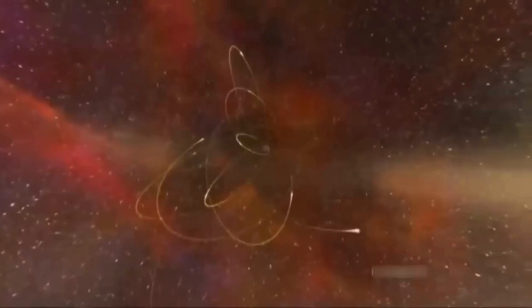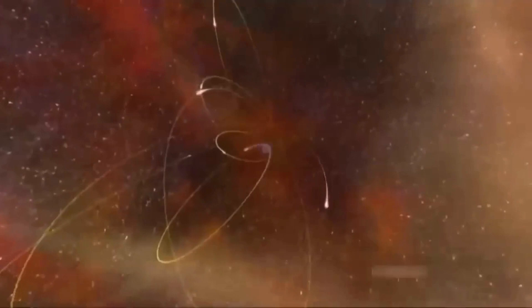Ghez knew that they had to be circling a single massive object. Most black holes are thought to be about 10 times more massive than our sun. But the object at the center of the Milky Way was roughly 3 million times as massive.